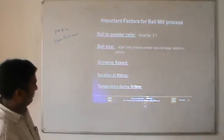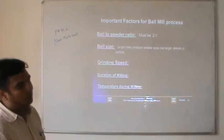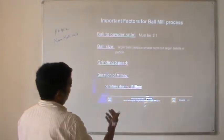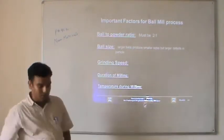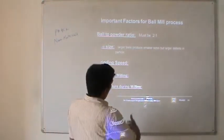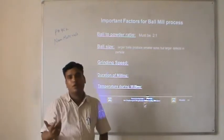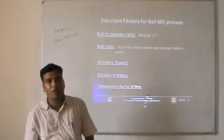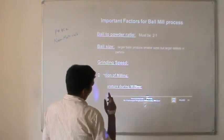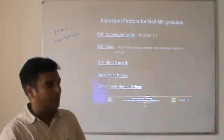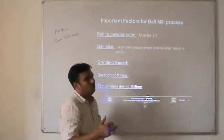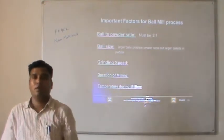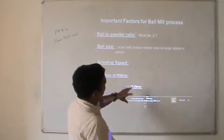The third factor important for synthesis is grinding speed. There are a number of grinding speeds available in ball mills — 1000 RPM, 2000 RPM, or 300 RPM. The fourth factor is duration of milling: if you mill for 100 hours you produce 100 nm particles, but if you run it for 40 hours you might get 10 or 20 nm. The last factor is temperature during milling. If milling at high temperature, the impact energy produced by collision of ball and powder with the container increases by a factor of 3kT, giving faster nanoparticles, but there may be possibility of oxidation.